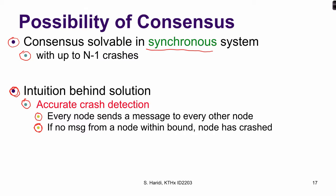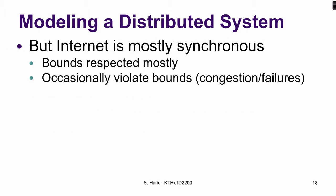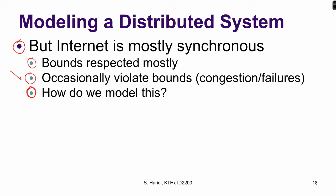But synchronous systems are not useful for internet-based distributed services. The question is: is there any middle ground between synchronous and asynchronous systems? If you look carefully at the internet, in some sense it is mostly synchronous — there are bounds on transmission from sender to receiver. But occasionally, internet services violate those bounds due to congestion and failure. For example, most of the time in a data center, messages may take less than 10 milliseconds; in less common cases, maybe 100 milliseconds. But sometimes it can take longer.